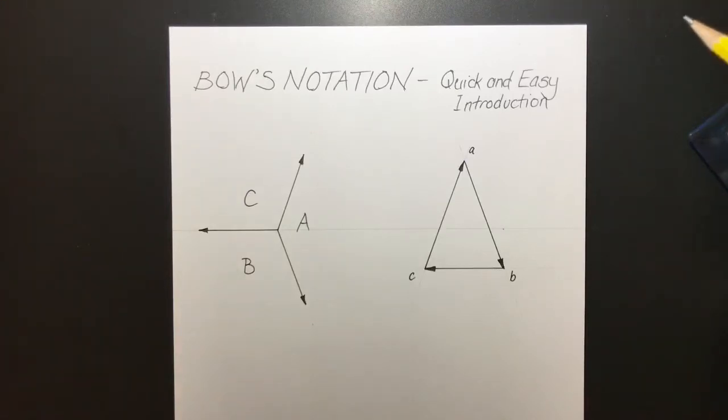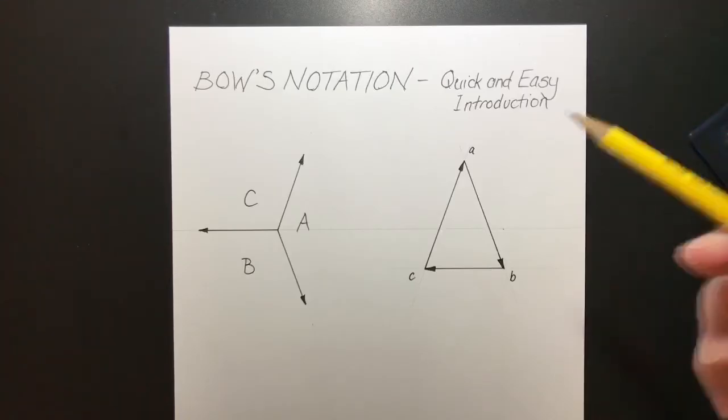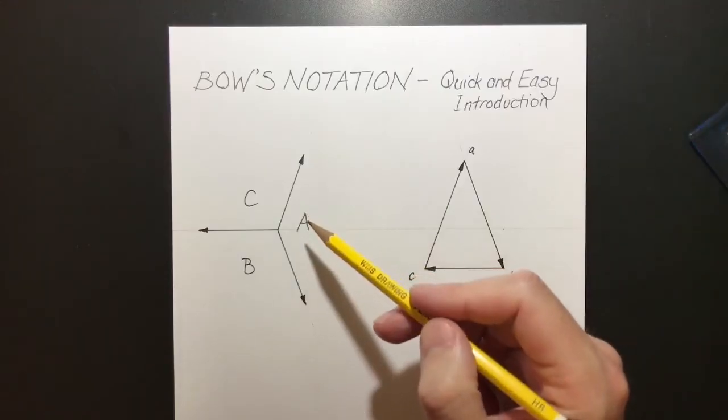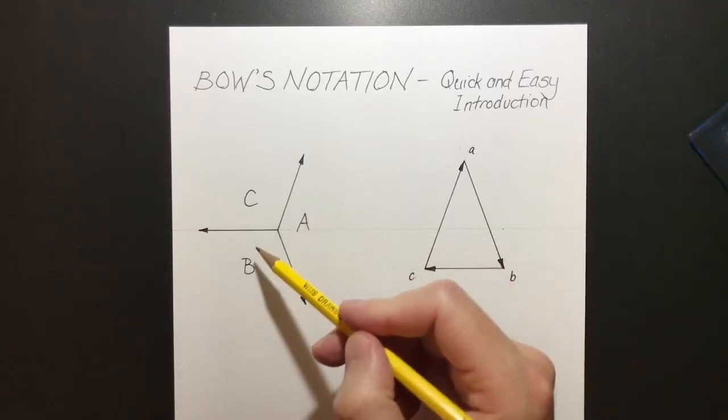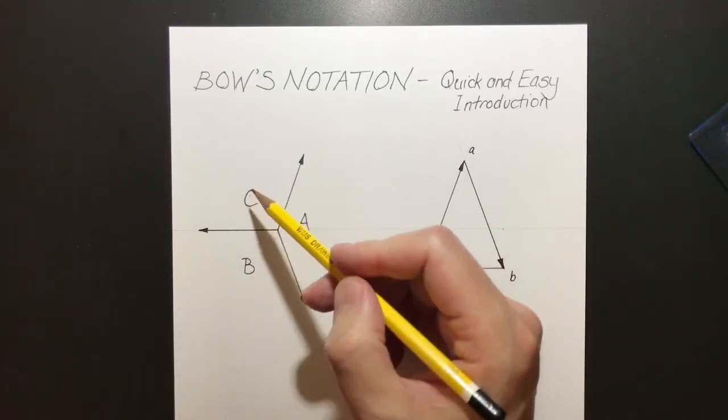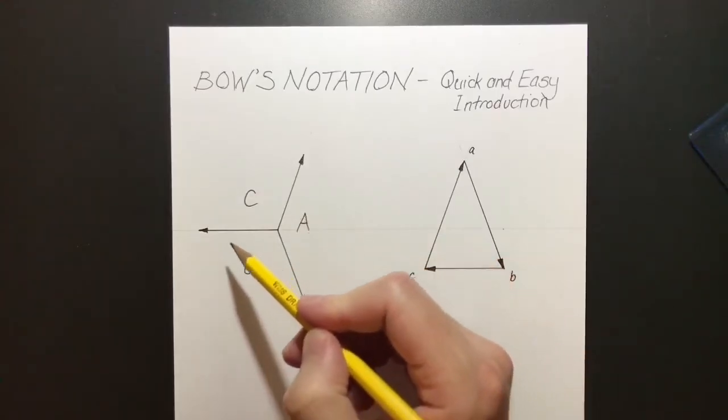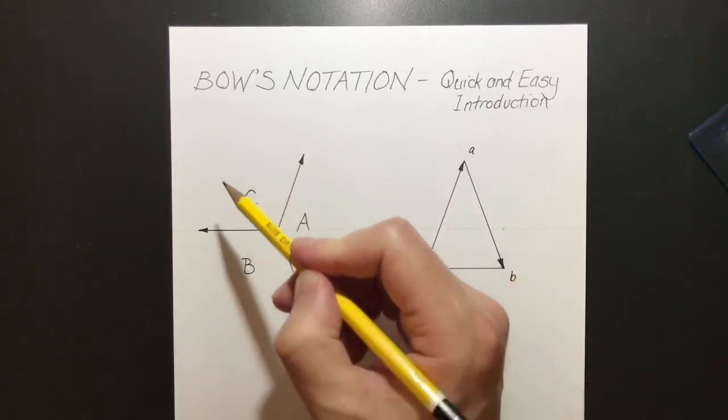Here we have a quick and easy introduction to Bow's notation. On the left we can see our space diagram with the capital letters A, B, and C moving clockwise around our space diagram.